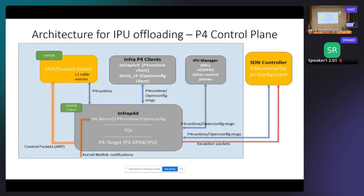TDI is the table-driven interface, also open-sourced under P4 lang, along with a target backend which could be DPDK in software or IPU. We create a P4 pipeline — we write the entire pipeline in P4, so your VXLAN, L2, and L3 switching/routing capabilities all get written in P4. This P4 is compiled by P4C to generate different artifacts that go in each layer and program your backend, so your frontend and backend will have the same information about how your control pipeline looks.